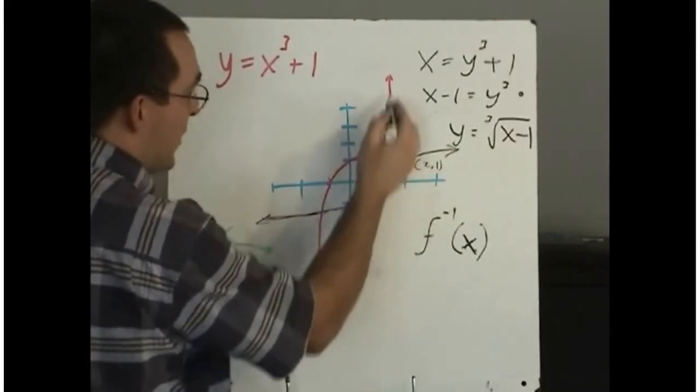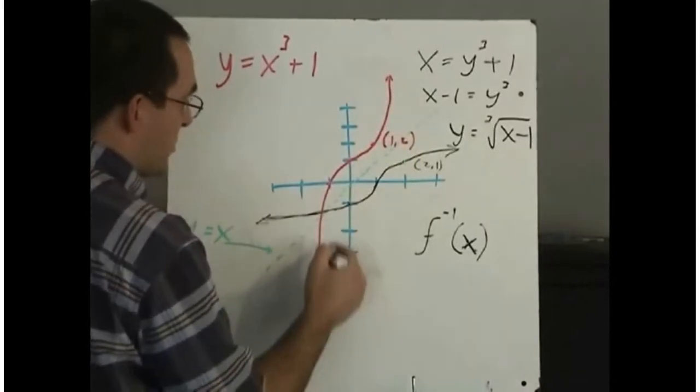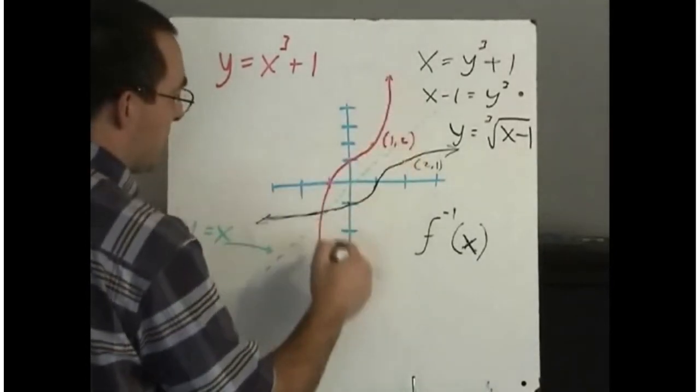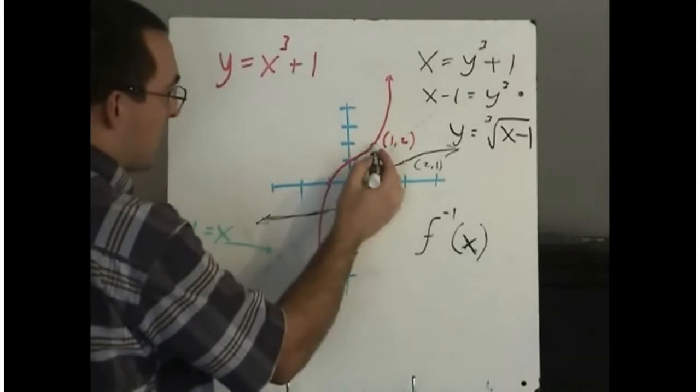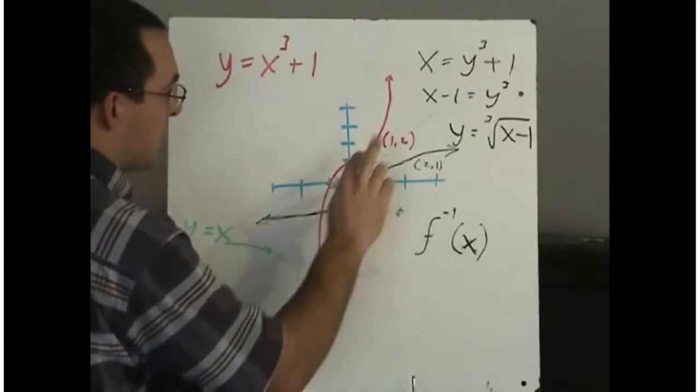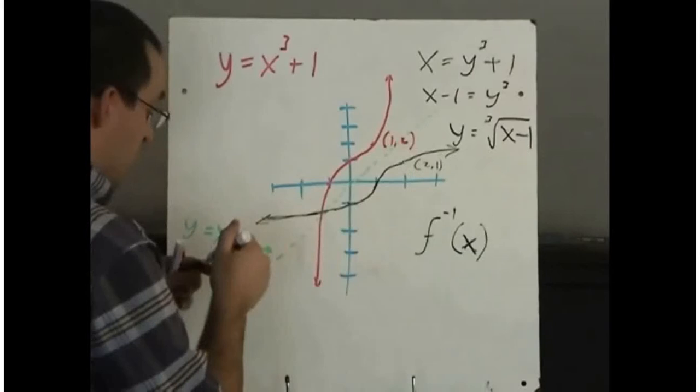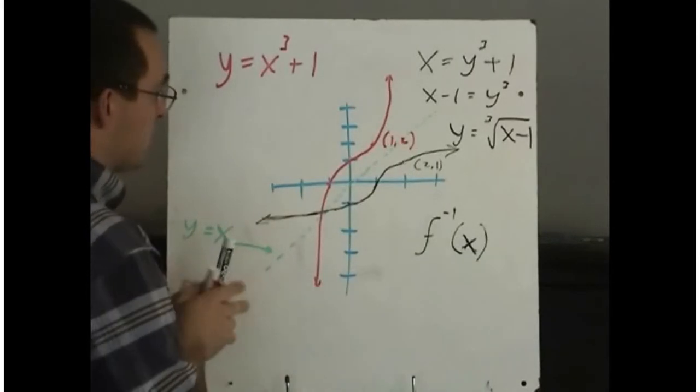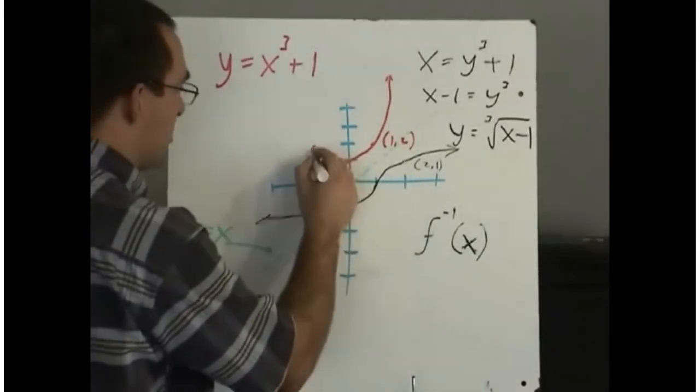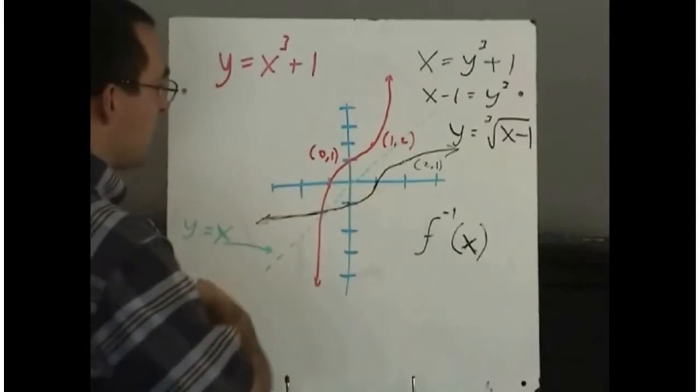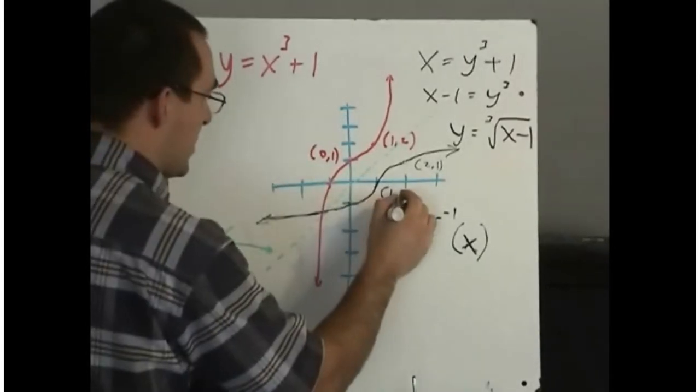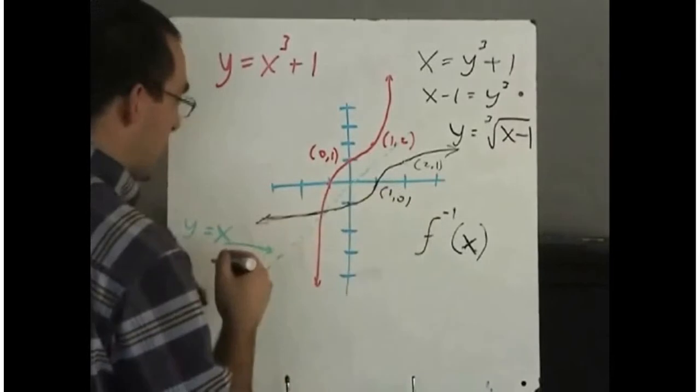So if you're asked to sketch the graph of an inverse, say you're given a picture of this red one here and you're asked to graph its inverse, just take its coordinates, take a few points in the graph, switch them around and replot them. So here's another point here, 0, 1. Is the point 1, 0 on this graph? Yes it is, right here.